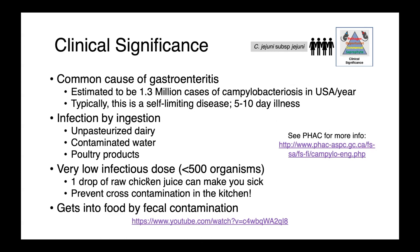In people, we're most concerned with Campylobacter jejuni subspecies jejuni, which is a very common cause of gastroenteritis. It's estimated that there may be up to 1.3 million cases of campylobacteriosis in the United States each year. This is typically a self-limiting disease — five to ten days of misery and then it goes away on its own. Infection is by ingestion, typically associated with unpasteurized dairy, potentially contaminated water, and most importantly poultry products. Improperly prepared meat or cross-contamination in the kitchen can result in disease. The infectious dose is very low — only 500 organisms are required to cause illness — so a single drop of raw chicken juice is enough, making prevention of cross-contamination very important.